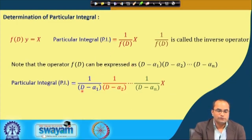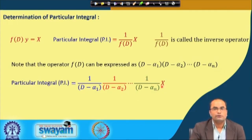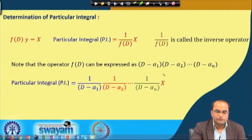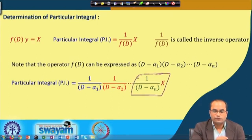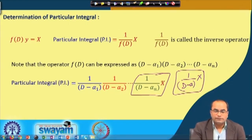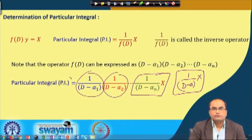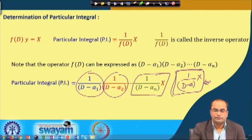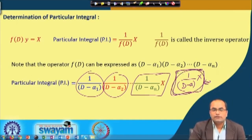The particular integral written as [1/f(D)] X, where f(D) is the product of (D − αᵢ) factors, becomes [1/(D−α₁)] · [1/(D−α₂)] ··· [1/(D−αₙ)] operated on X. What is important here is that if we know how to evaluate [1/(D−a)] on X, then we can repeatedly apply this idea and find the particular integral in the general form [1/f(D)] X.